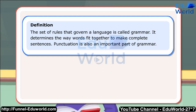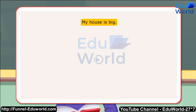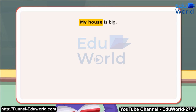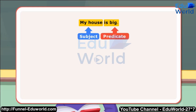A sentence is a group of words that make complete sense. Example: My house is big. A sentence has a subject and a predicate. Example: 'My house' is the subject and 'is big' is the predicate.